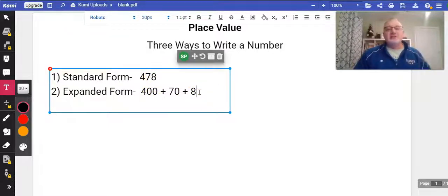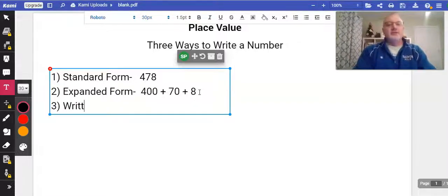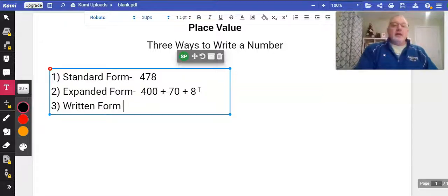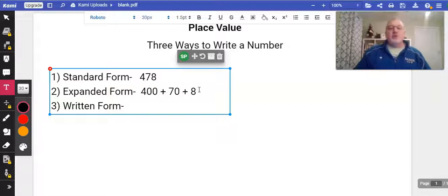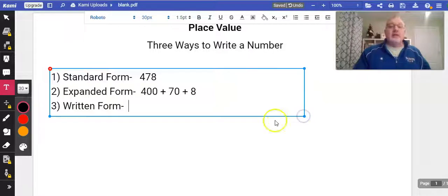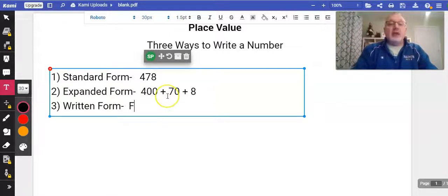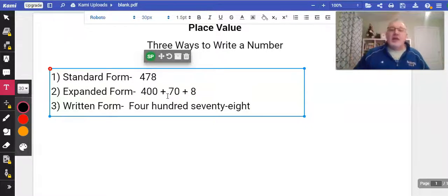Our other form is written form. I always tell the kids if you can say the number correctly, you'll always be able to write the number correctly. So the important part of written form is making sure you can verbally say the number right. So let's say that 478, four hundred seventy-eight. That's how you say that number.